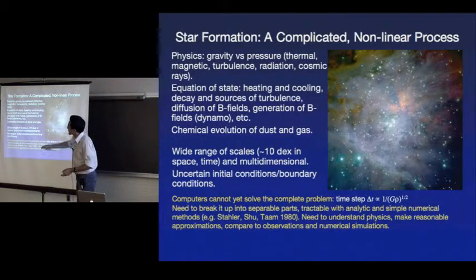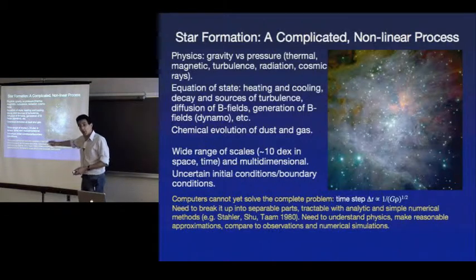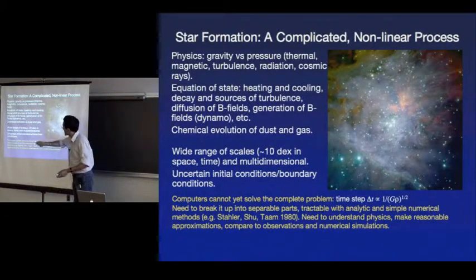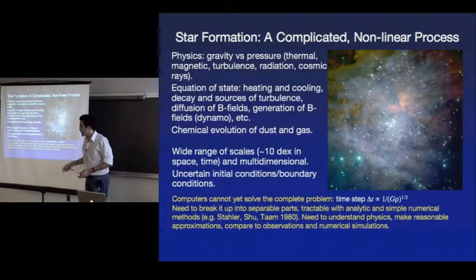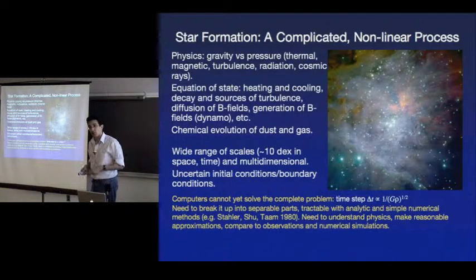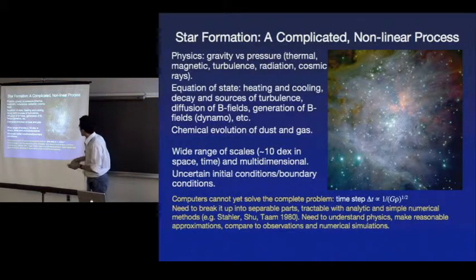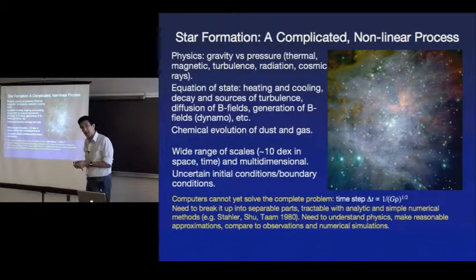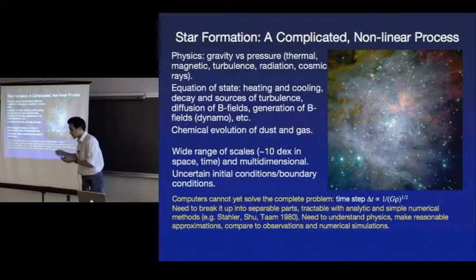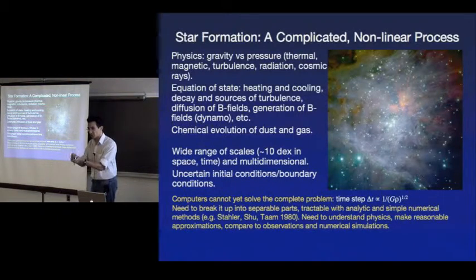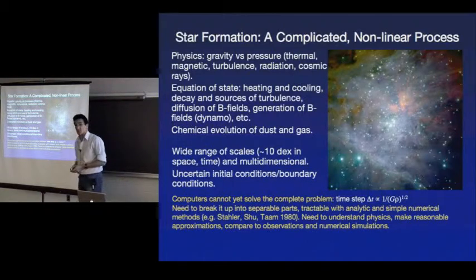One fundamental problem for computer simulations is that the time steps needed are basically of order the freefall or dynamical time. As densities get extremely high in the collapse process, these timescales get very short. Your computers basically grind to a halt trying to resolve the highest density regions — in early Population III simulations, they reached near-stellar densities, but one hour of computer time on a supercomputer only advanced the simulation by about 30 minutes of simulated time.